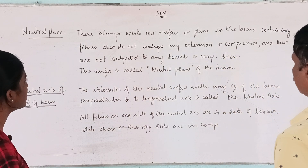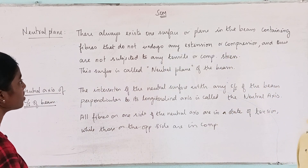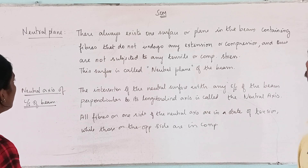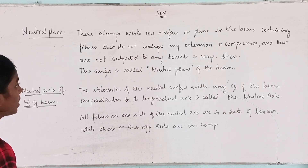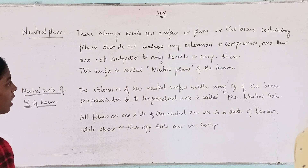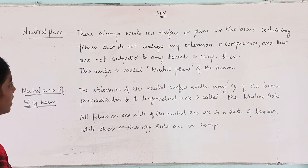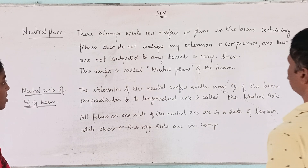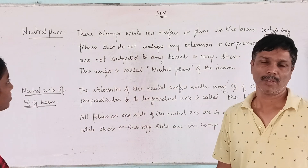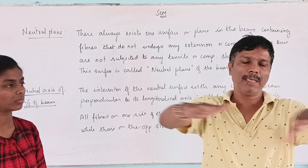There always exists one surface or frame in the beam containing fibers that do not undergo any extension or compression, and thus are not subjected to any tensile or compressive stress. This surface is called the neutral surface of the beam.